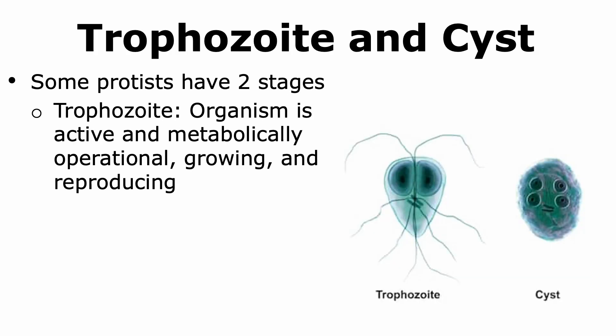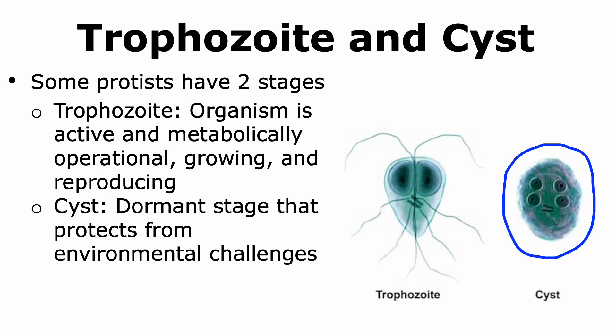Some protists are able to exist in two stages. The trophozoite stage is where the organism is metabolically active, growing, and reproducing. When environmental conditions get harsh, these protists can then form a cyst, which is a dormant stage that protects the protists from the harshness of the environment.